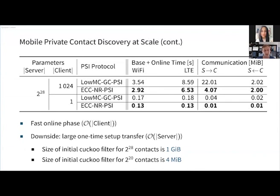The downside of these protocols is the large one-time setup transfer, where you need to transfer the representation of the server items — be it a cuckoo filter or similar — to the client. This communication scales with the server set size. For example, with 2^28 server contacts, the initial cuckoo filter to transfer is about one gigabyte, which is not very practical when installing a new messaging application. However, if you scale down to a million contacts, the cuckoo filter goes down to about 4 megabytes, which is already quite doable.